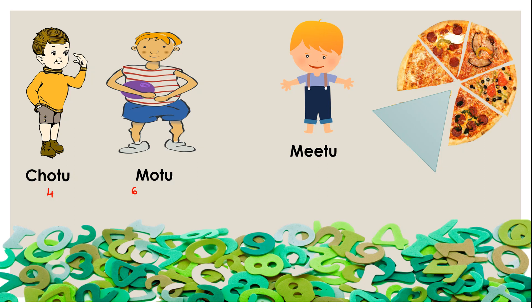Mitu was in a fix — he had to divide only the available five slices. But Chotu and Motu said they could eat four and six respectively, which means ten slices were required. The available five slices had to be divided. Taking a very scientific approach, Mitu found out the ratio in which Chotu and Motu had desired to eat — that is four to six, which simplifies to two to three. So he divided the available five slices in the ratio two to three, giving two slices to Chotu and three slices to Motu. In this way, the available five slices got divided.